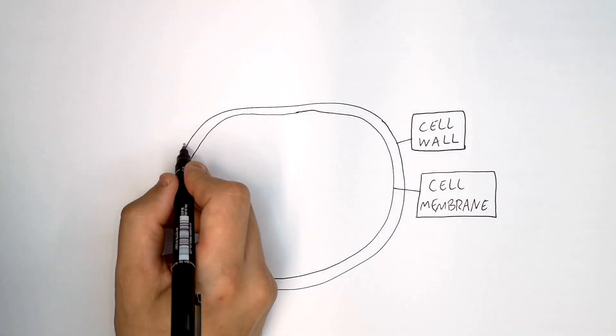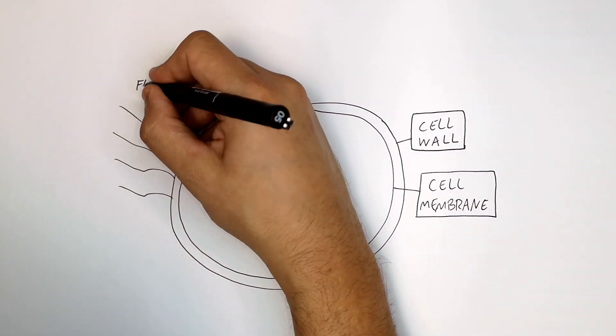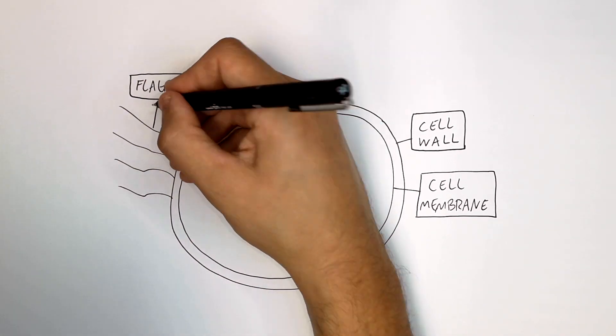Bacterial cells also have these things called flagellum. Flagellum help it to move.